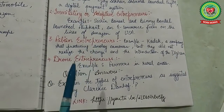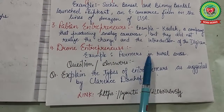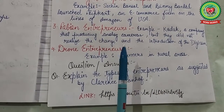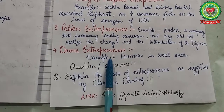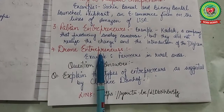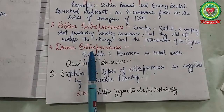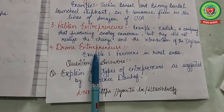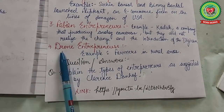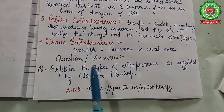The fourth type is the drone entrepreneur. For example, farmers in rural areas. These are entrepreneurs who continue to operate in traditional ways and resist changes. Drone entrepreneurs refuse to adopt opportunities or carry out changes in production and distribution, and that is why they are called drone entrepreneurs.